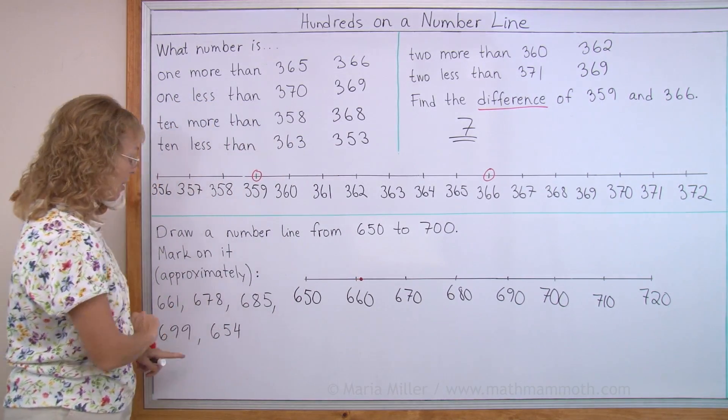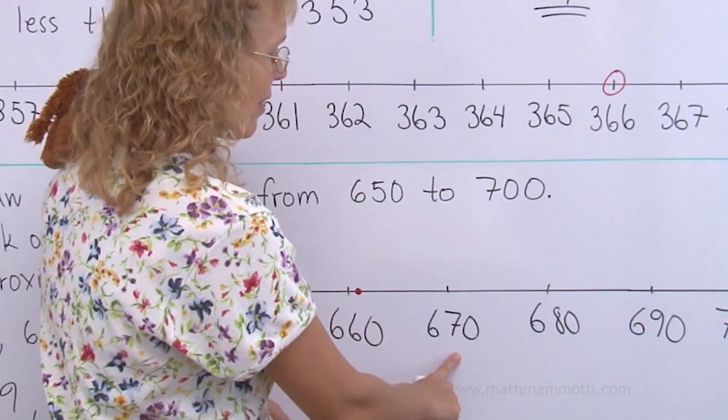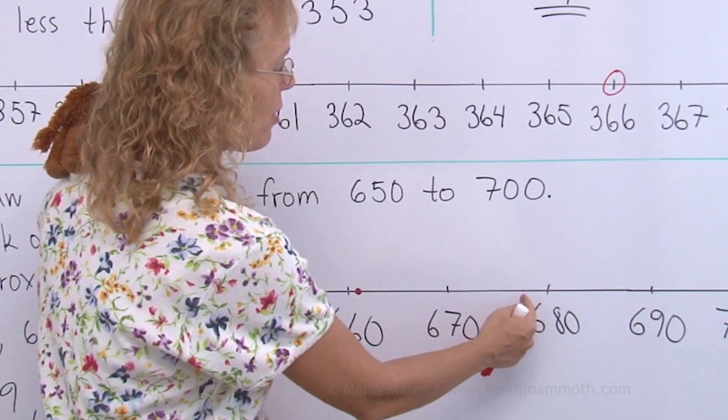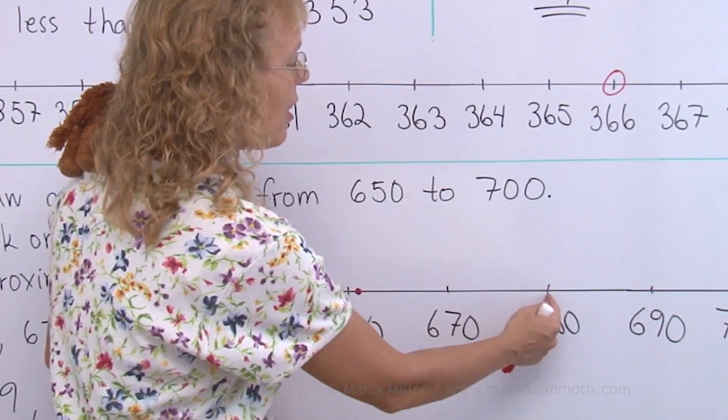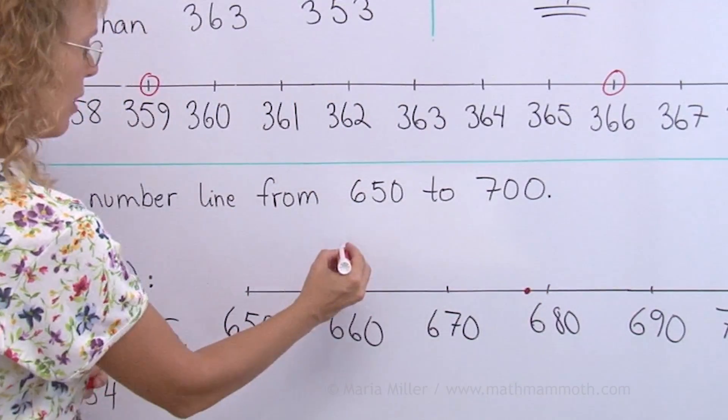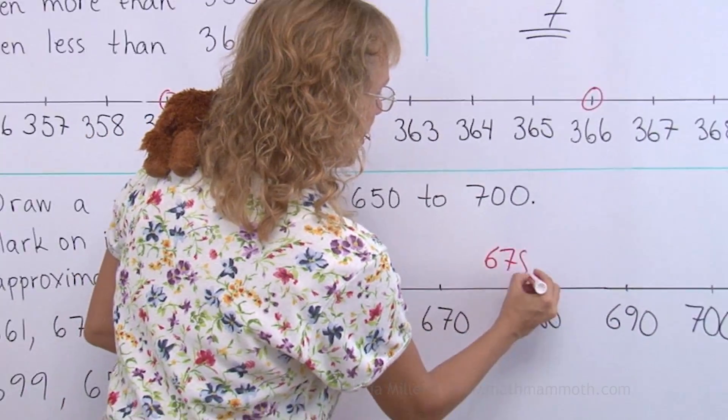678. I'll first find 670. 78. 8 is pretty close to this end because after 78 would come 79 and then this 680. So let's put it close over there. And I forgot to write this, 661, 678.